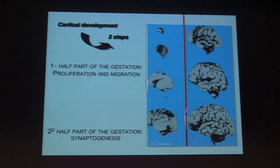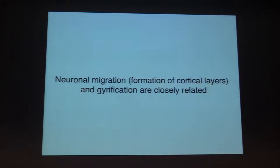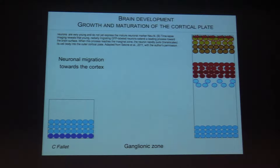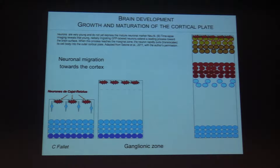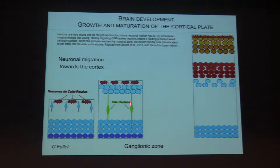In the second part of gestation, the brain is more complex with gyration. We have three main steps in the development of the neuronal matrix. First, you have the proliferation of cells in the periventricular zone, then the migration of the cells towards the cortical plane — to the peripheral part of the brain. All cells are guided by a radial pattern, and all steps are linked by specific genes.